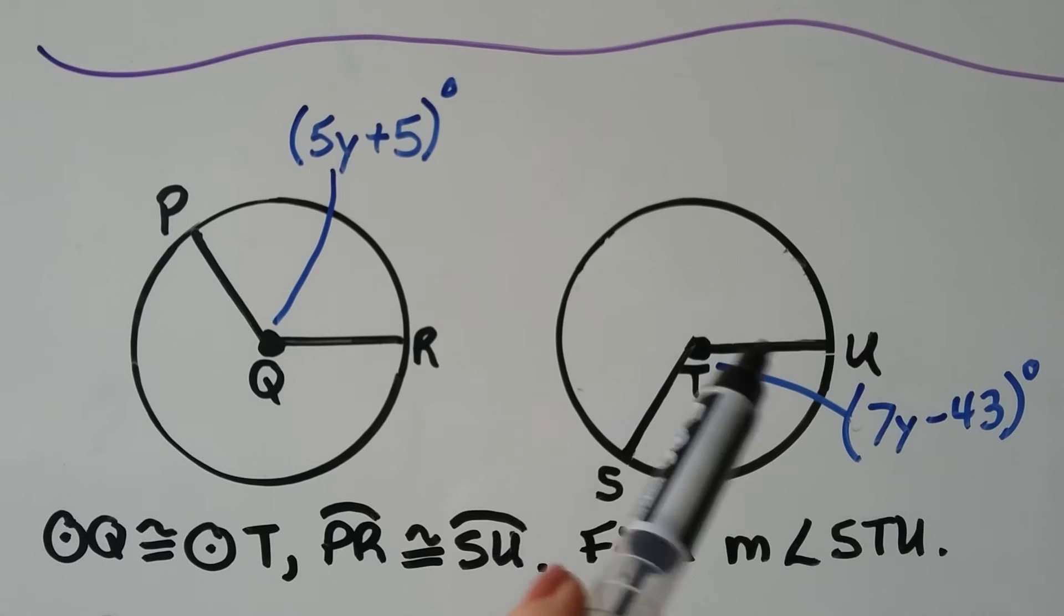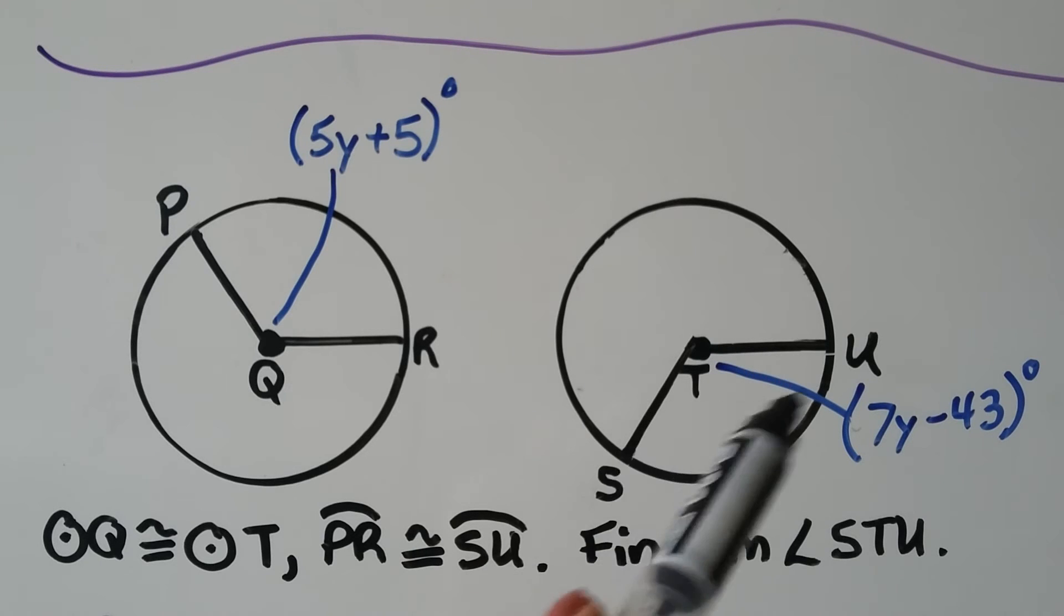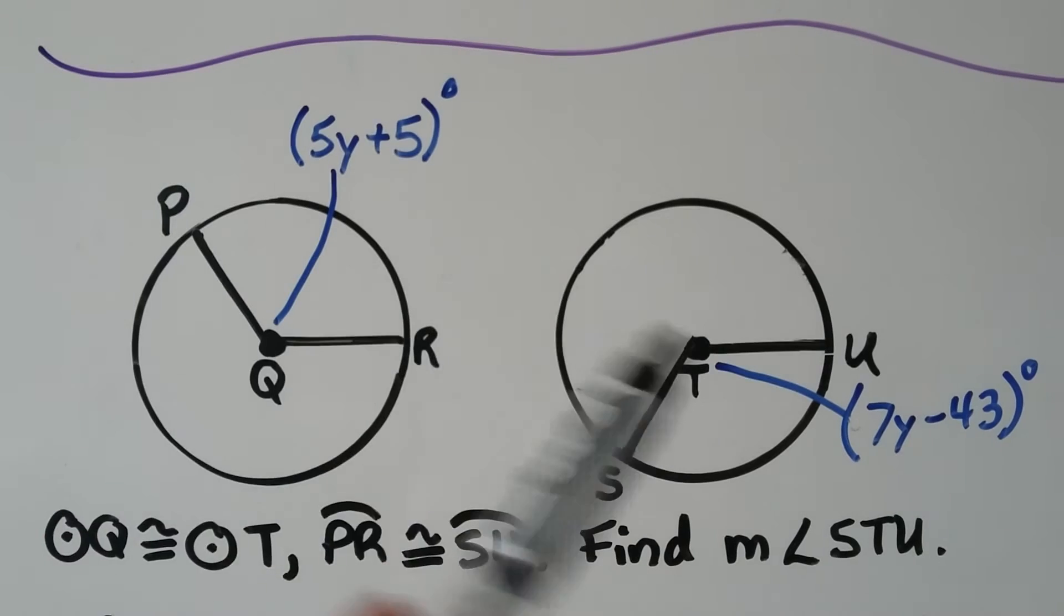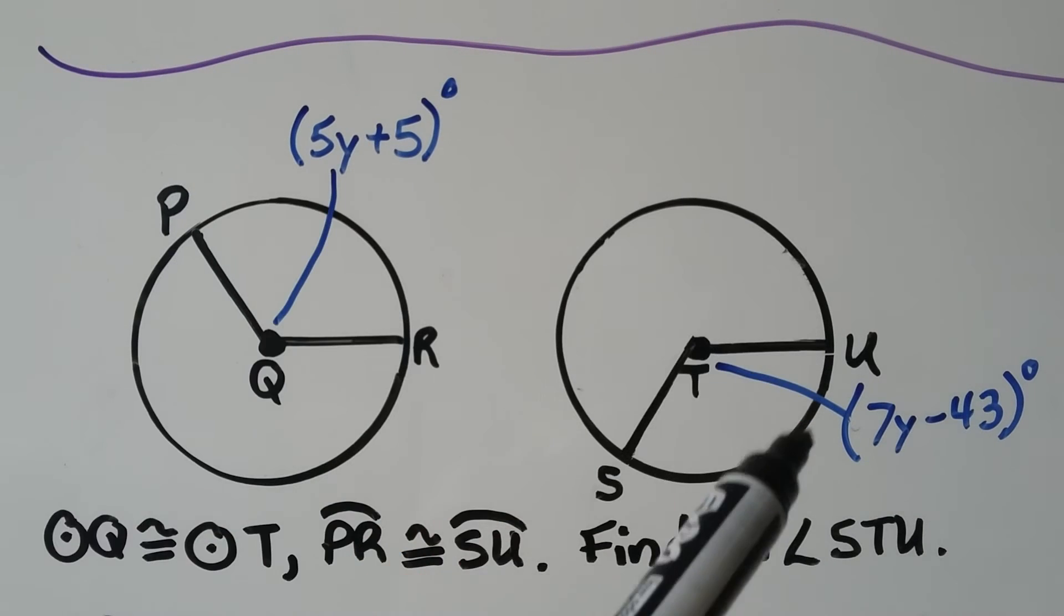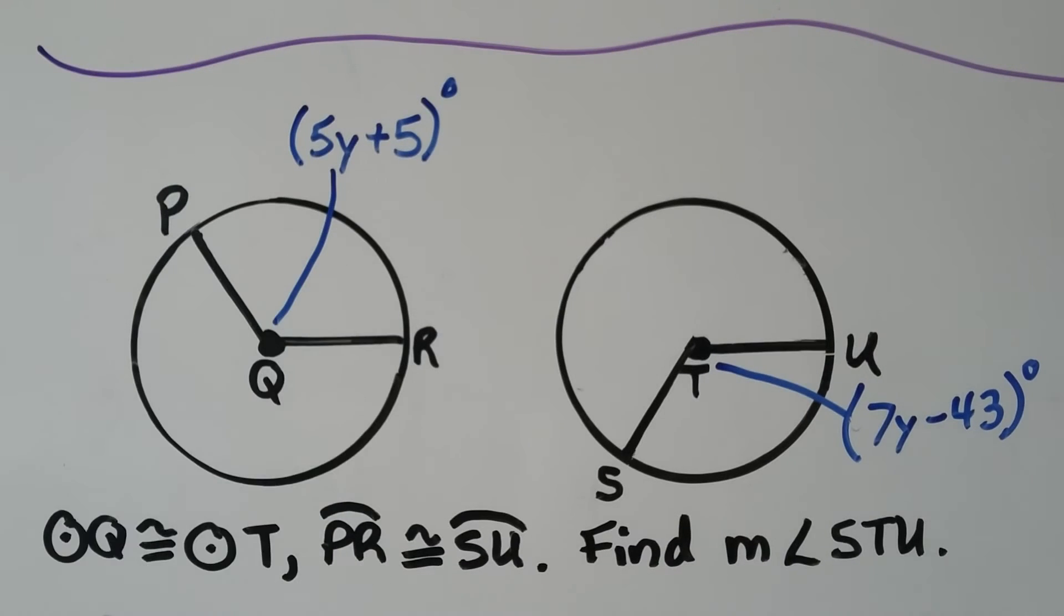We know that angle STU is 125 degrees. So we know this is 125 degrees here. And you know what? If that's 125, and they're congruent circles, and these are congruent arcs, we know that's 125 degrees, don't we?